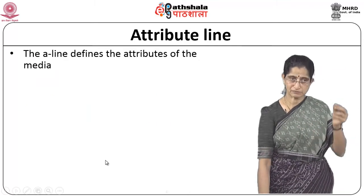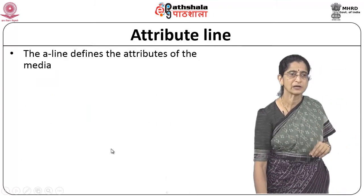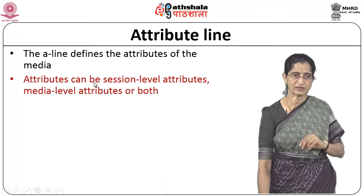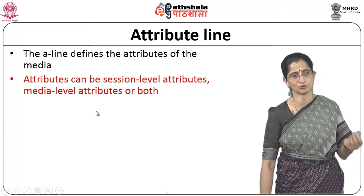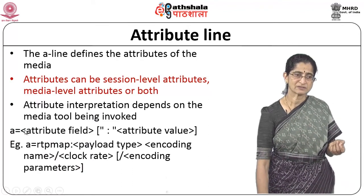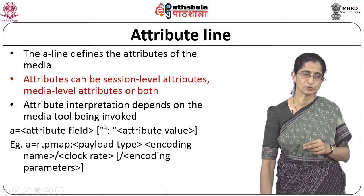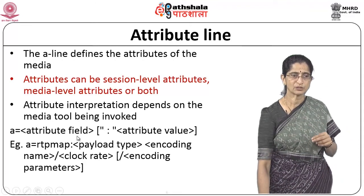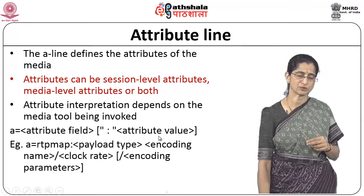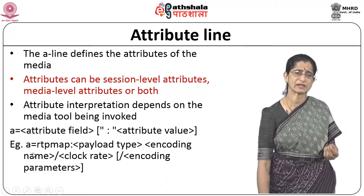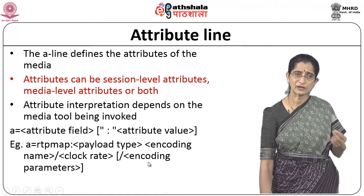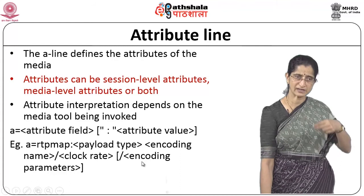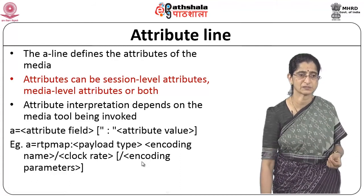The attribute line A defines various attributes of the media at either session level or media level. The format is: A equals an attribute field followed by attribute values. For example, A equals rtpmap, followed by payload type, encoding name, clock rate, and encoding parameters. These are examples of what can be specified as attributes for a given media.